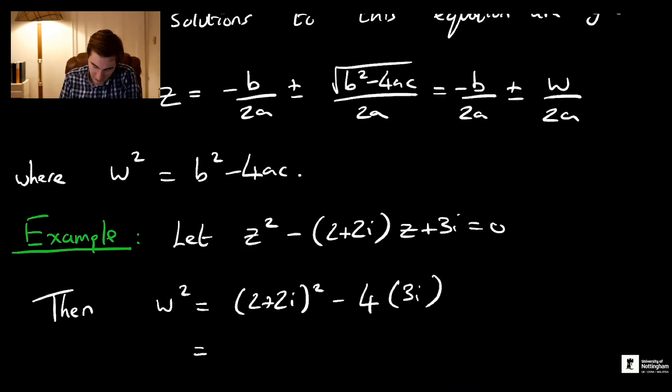Squaring this, I get 4 - 4 + 8i minus 12i. So the 4s clearly cancel.